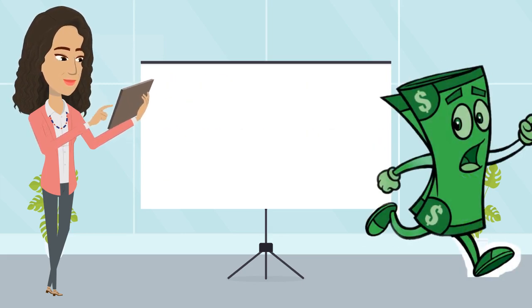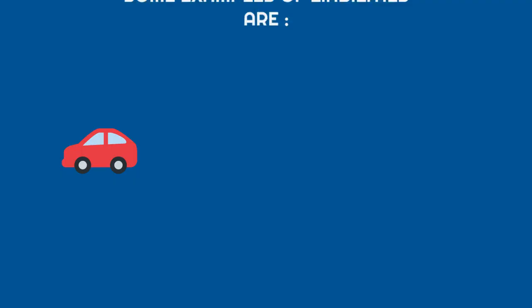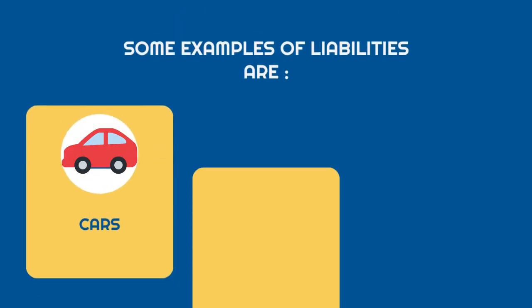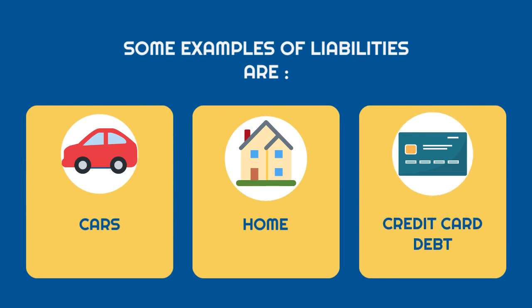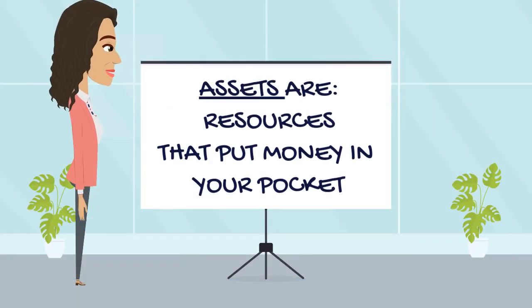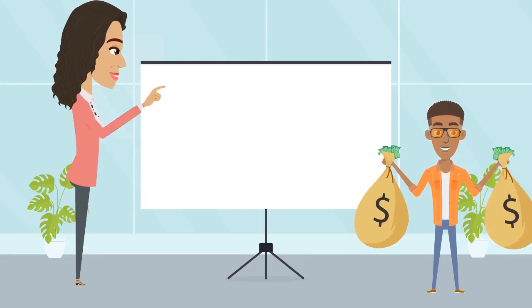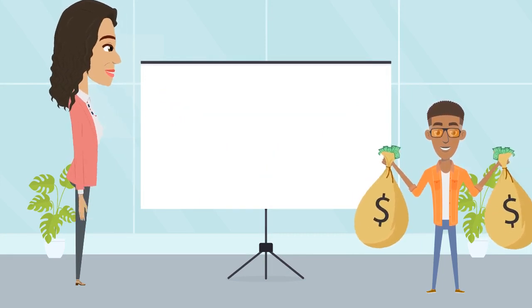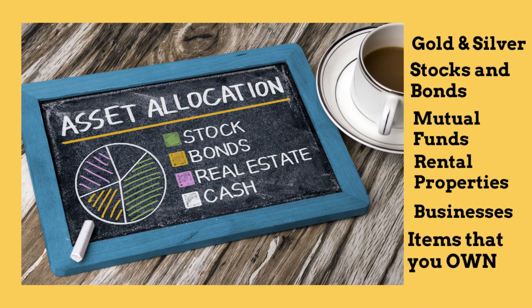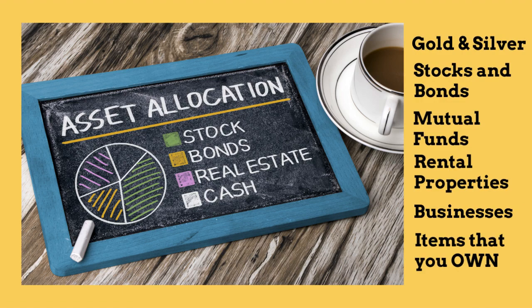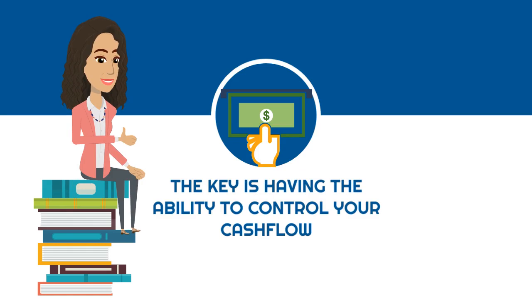Liabilities are losses or expenses that take money out of your pocket. Examples of liabilities are cars, a home, and credit cards. Assets are resources that put money into your pocket. Some assets are things like gold and silver, stocks and bonds, mutual funds, rental properties, and businesses.